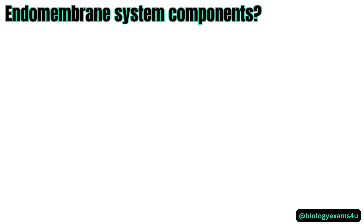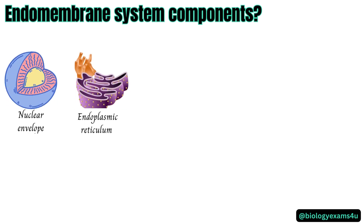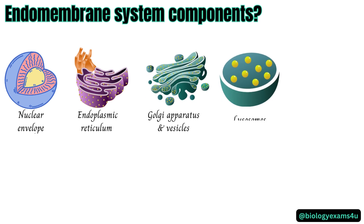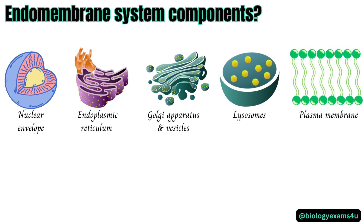Let us see which are the components of the endomembrane system. Starting with the nuclear envelope, then there is endoplasmic reticulum — both rough endoplasmic reticulum and smooth endoplasmic reticulum — followed by the Golgi apparatus, then lysosomes, vesicles, and plasma membrane. Although not technically within the cell, most recent studies include the plasma membrane in the endomembrane system because it interacts with the other endomembrane organelles in taking up substances by endocytosis or releasing substances outside of the cell by exocytosis.